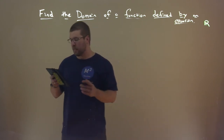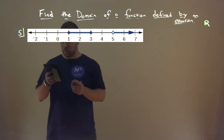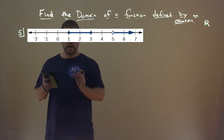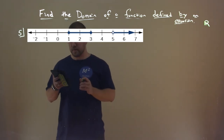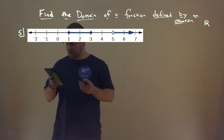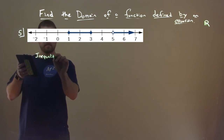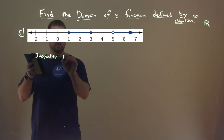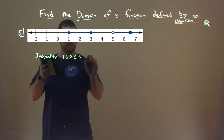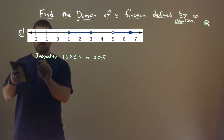How do we see that from a number line? Number 5: you should see a number line. From 1 to 3 there's a blue line with closed circles at both 1 and 3. At 5, there's an open circle, and then the blue line goes to the right forever. Using inequality notation: 1 is less than or equal to x, which is less than or equal to 3, or x is greater than 5.